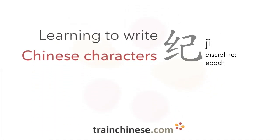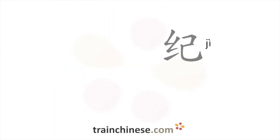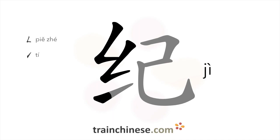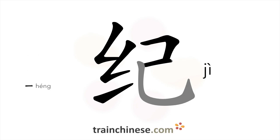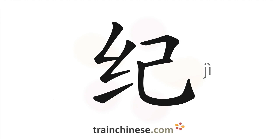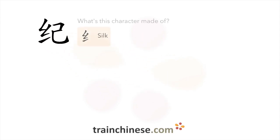Let's take a look at this character. It's written using six strokes. Let's look at what goes into this character. This character contains the radical silk.